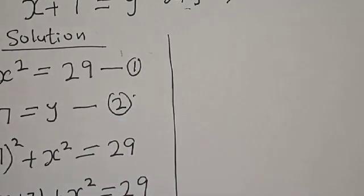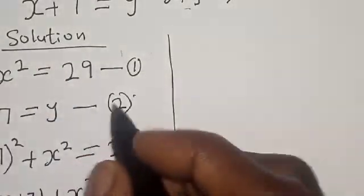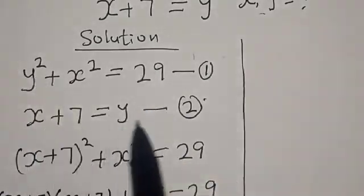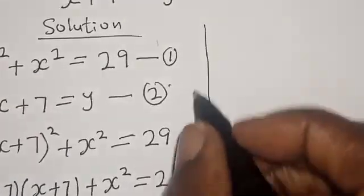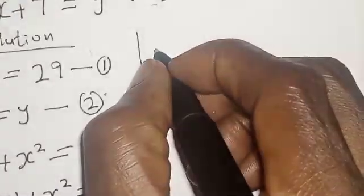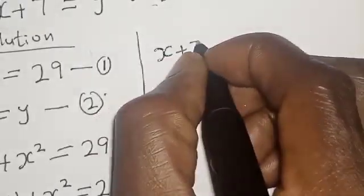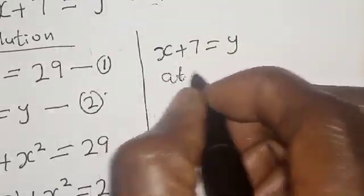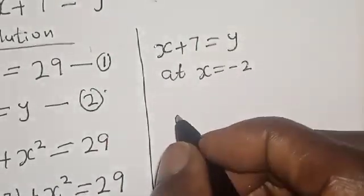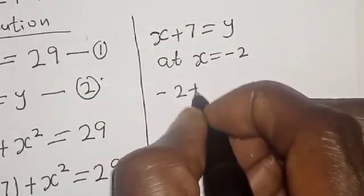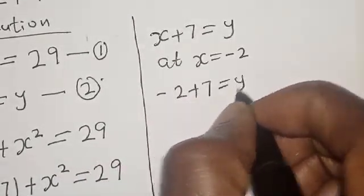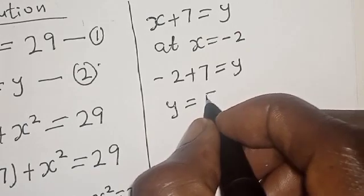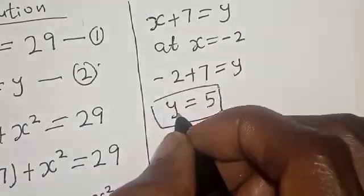Now we need to find the value of y. We'll use equation 2: x plus 7 is equal to y. When x is equal to minus 2, we have minus 2 plus 7 is equal to y, so y₁ is equal to 5.